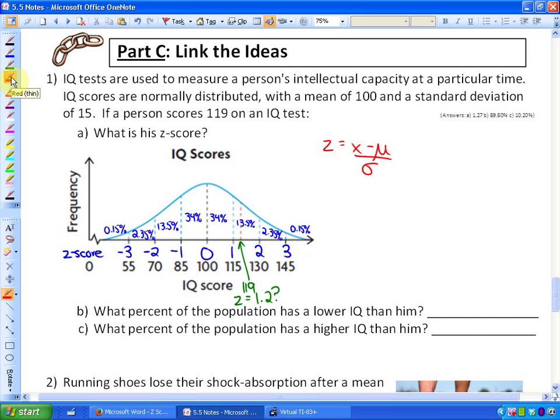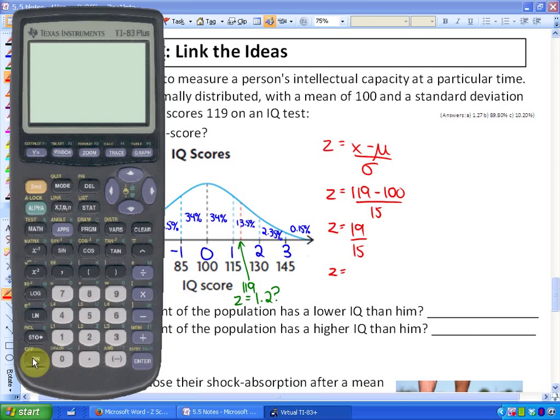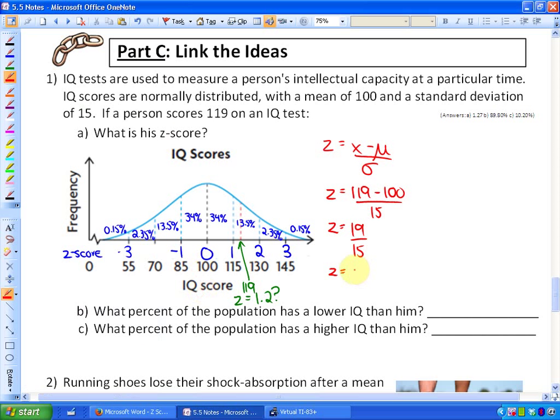What we can now do is actually use a formula to find out your z-score. The z-score for this particular student, the number of standard deviations he is above the mean, would be his data value minus the mean divided by the standard deviation. So that would be 19 divided by 15, and the z-score there would be approximately 1.27. So my estimate was pretty good.